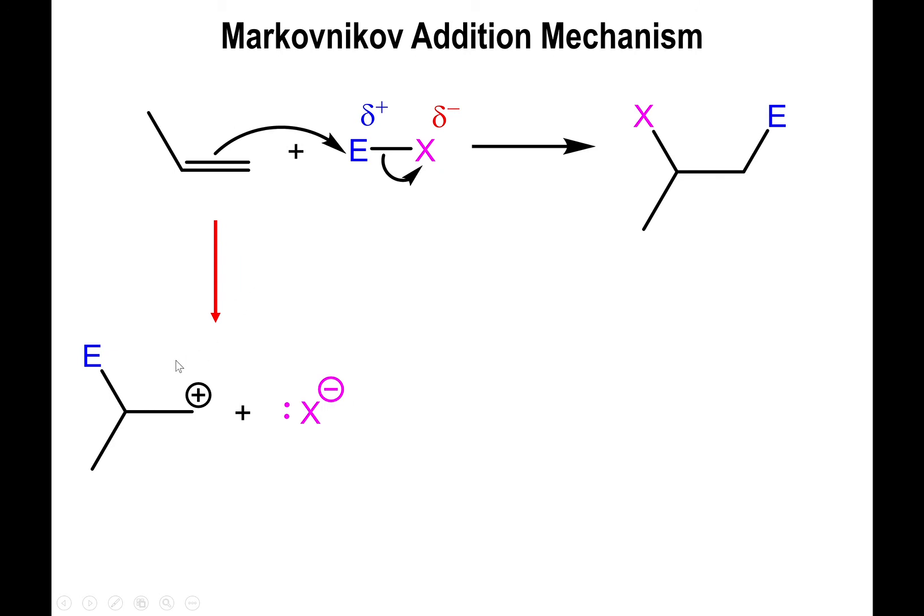But when this takes place, you have basically used up two of those electrons of the pi bond to make a new bond, a new sigma bond between one of the carbons of what used to be the double bond and the heteroatom E. And so what that means is that the other carbon of what used to be the double bond now lacks two electrons, and so now it generates a carbocation.